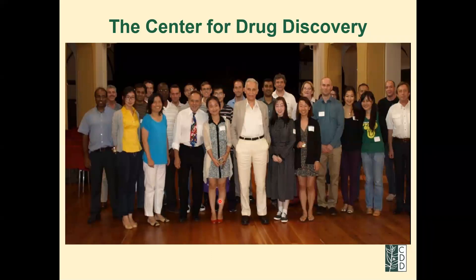You showed brain slices with radioligands early in the talk. How abundant are cannabinoid receptors in the brain compared to serotonin, opioid, or dopamine binding sites? For all cannabinoid enthusiasts — CB1 is number one: the most abundant receptor in the brain.